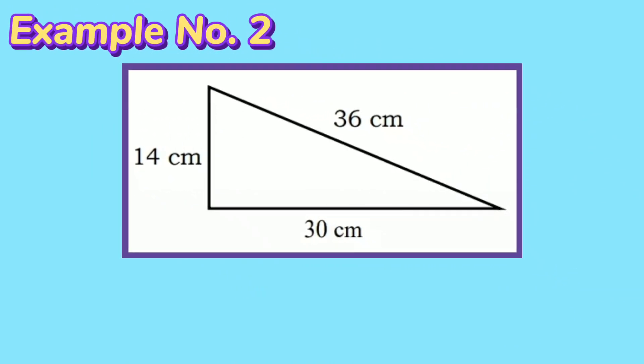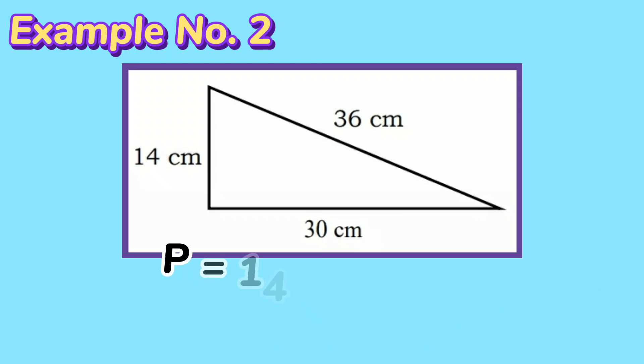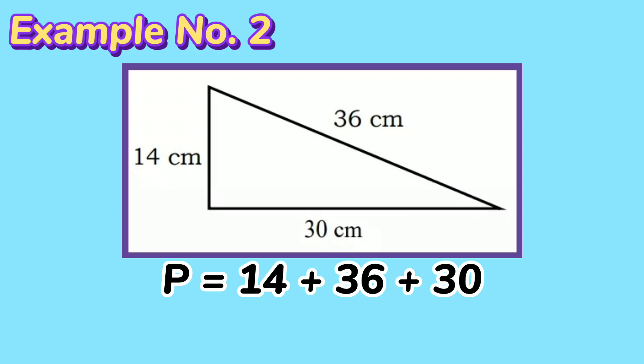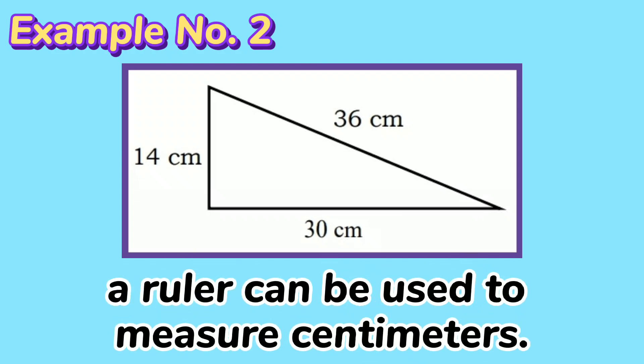Example number 2: I have a scalene triangle that measures 14 centimeters, 36 centimeters, and 30 centimeters on its sides. What tool will you use to measure its perimeter, and what is its perimeter? P equals 14 plus 36 plus 30, giving you 80 centimeters. A ruler can be used to measure centimeters.